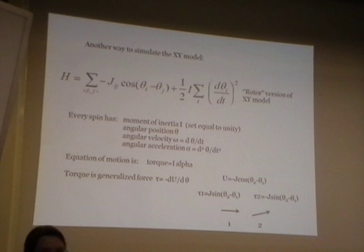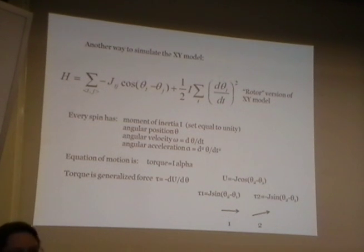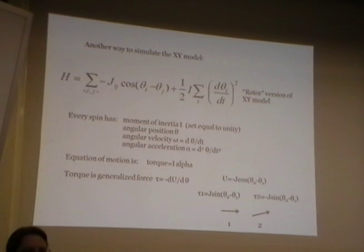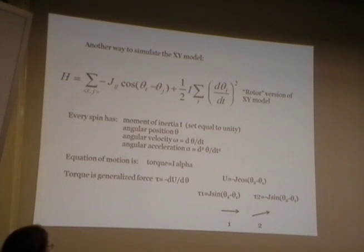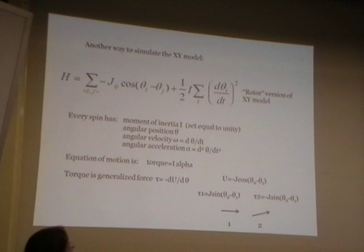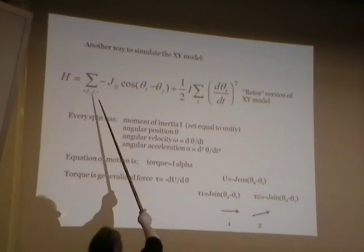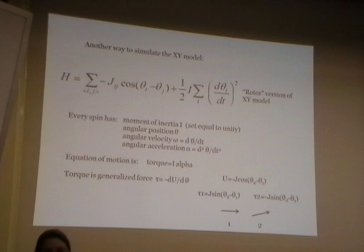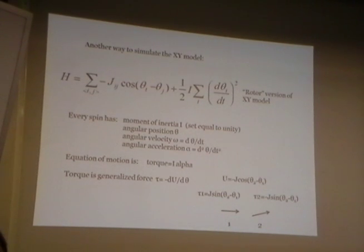In the XY model, there's a potential energy — that's what we were using before, SI dot SJ, which you can equally write as a cosine. To turn this into a mechanical model, we actually now assume that each little spin has a moment of inertia, which I'll call I.